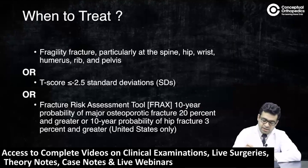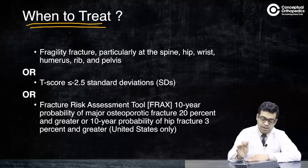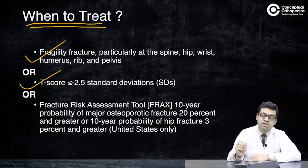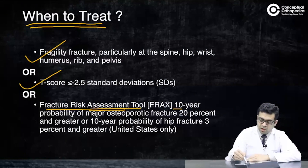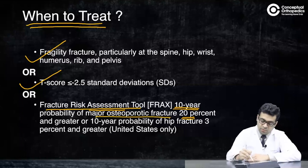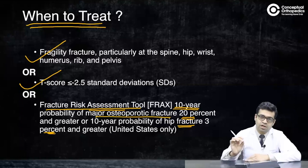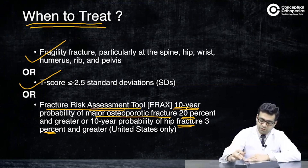We have already discussed the definition of osteoporosis, which also defines when to treat. The criteria include: a fragility fracture, a T-score less than minus 2.5, or using the FRAX fracture risk assessment tool to predict the 10-year risk of fracture. A major osteoporotic fracture risk of 20% or more, or a hip fracture risk of 3% or more, indicates treatment. This criterion is primarily used in the United States but has been incorporated into various osteoporosis treatment guidelines. I will explain how to use the FRAX tool next.